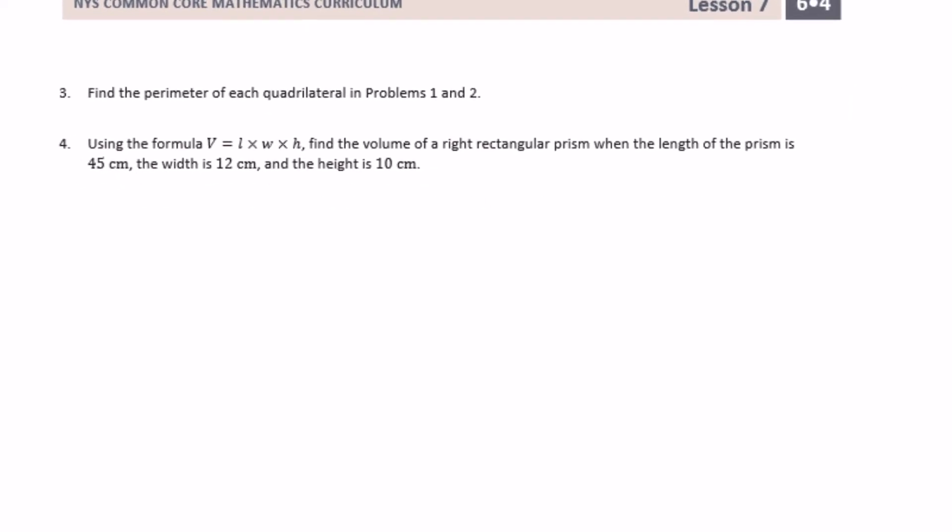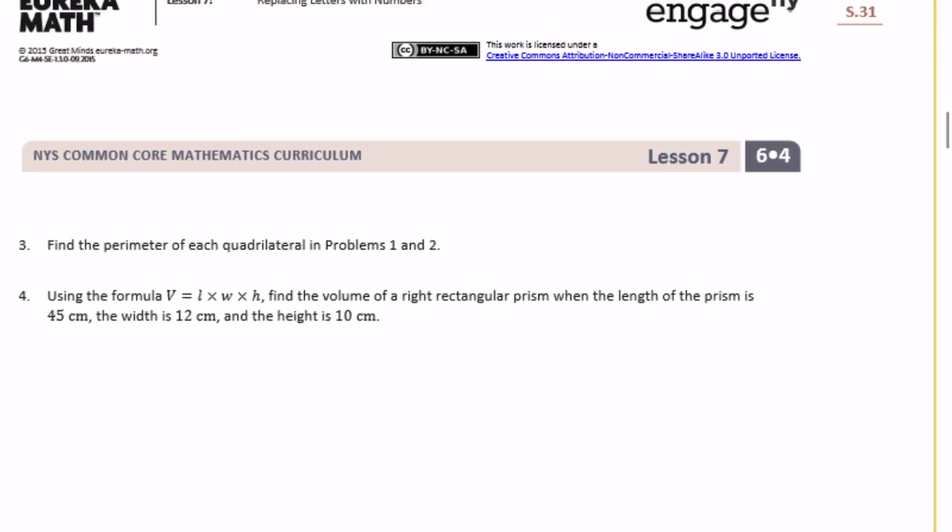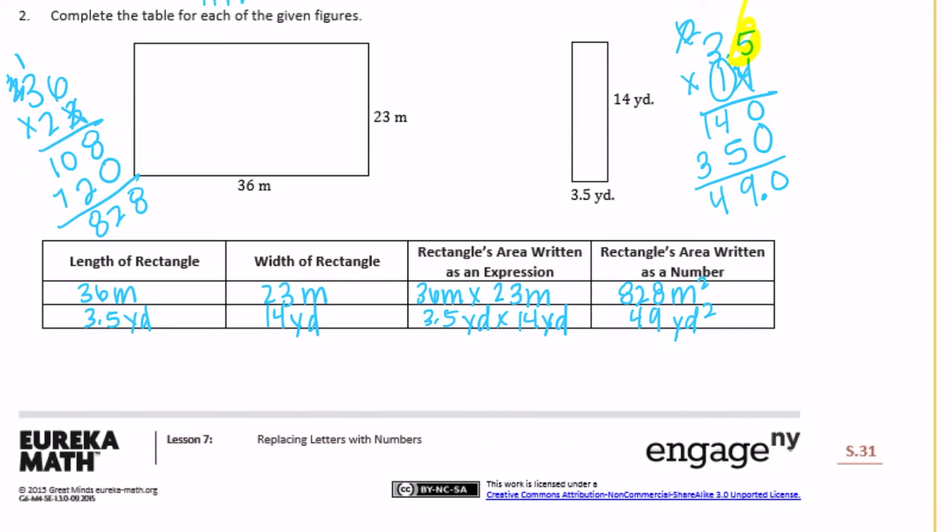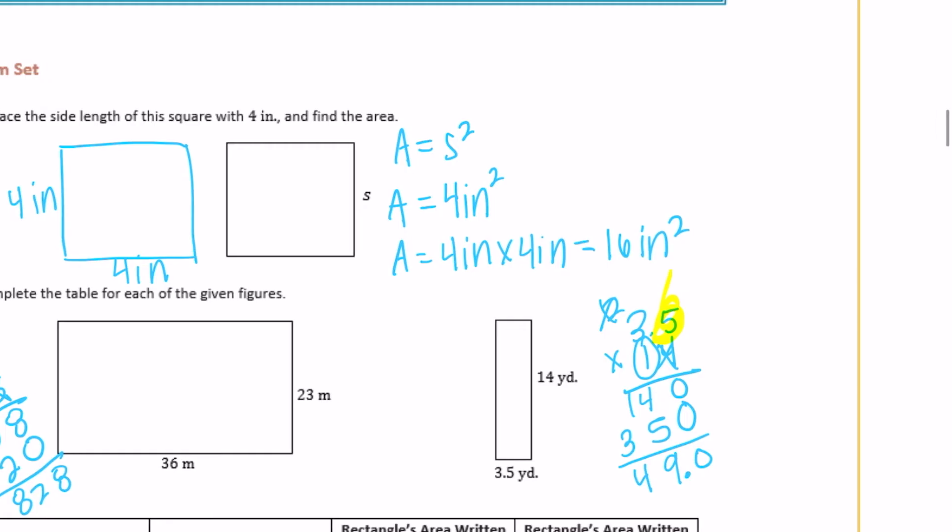Number three, find the perimeter of each quadrilateral in problems one and two. Finding the perimeter of the first one, remember the perimeter is the distance around the outside. Since this is a square, we have four and four and four, they're all four inches. So we just need to do four times four, and it is sixteen inches.